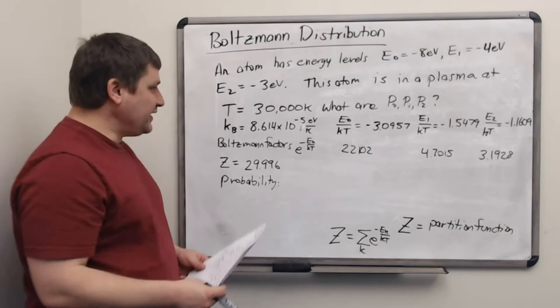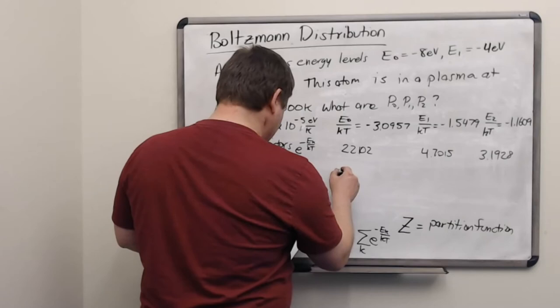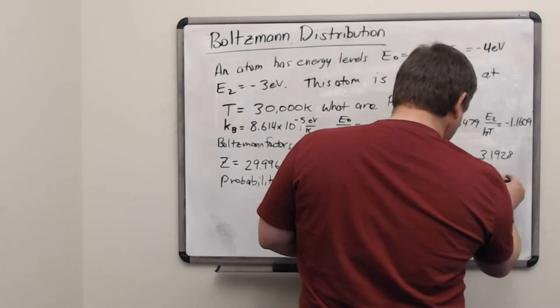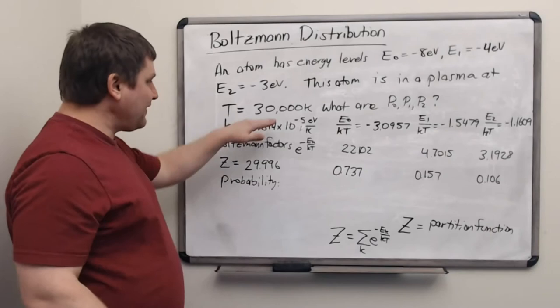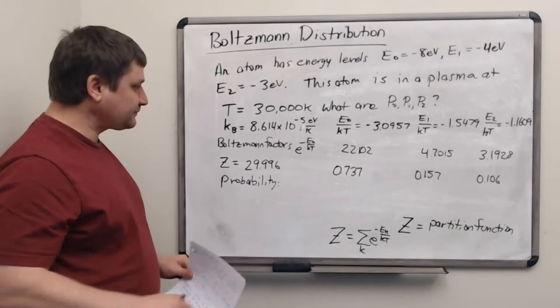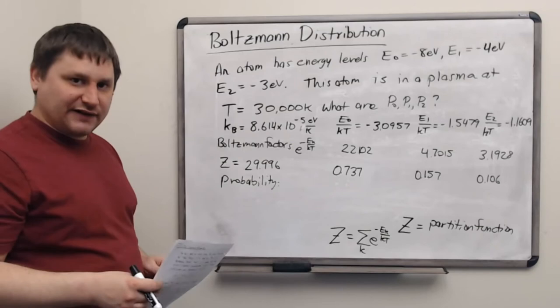Dividing each Boltzmann factor by the partition function gives the probabilities: the ground state probability is 0.737, the first excited state is 0.157, and the second excited state is 0.106. So even at this high temperature, it's still quite probable to find the atom in its ground state, and much less probable to find it in the second excited state.